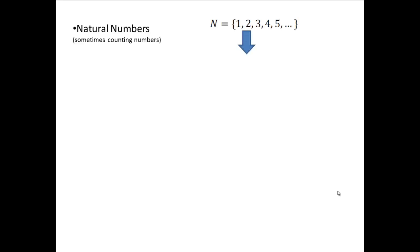Numbers evolve out of necessity. The first set of numbers is the counting numbers, which evolved because people wanted to keep track of their sheep and so on — to count, basically. That's why they're called counting numbers. This notation is called set notation.